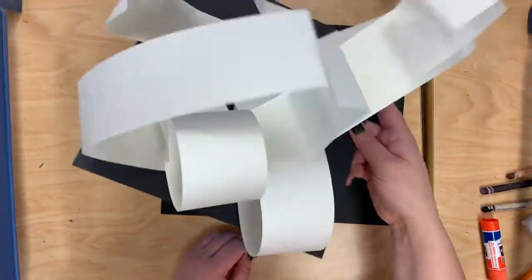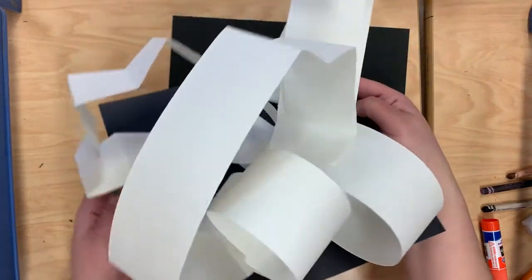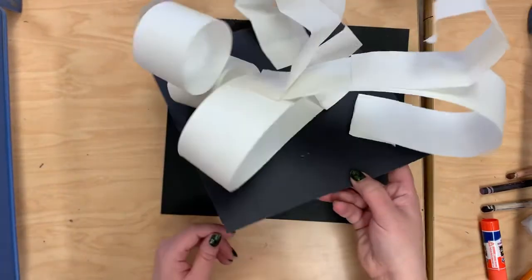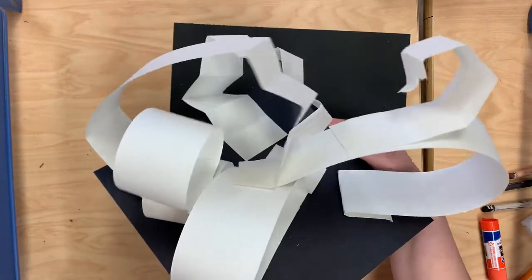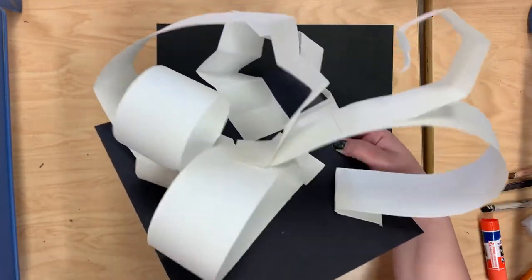Now this can be an abstract sculpture, which means that it doesn't look like something realistic. It's just lines and shapes, or you can try to make it look realistic. So if you want to make a person or a tree, you may do that.